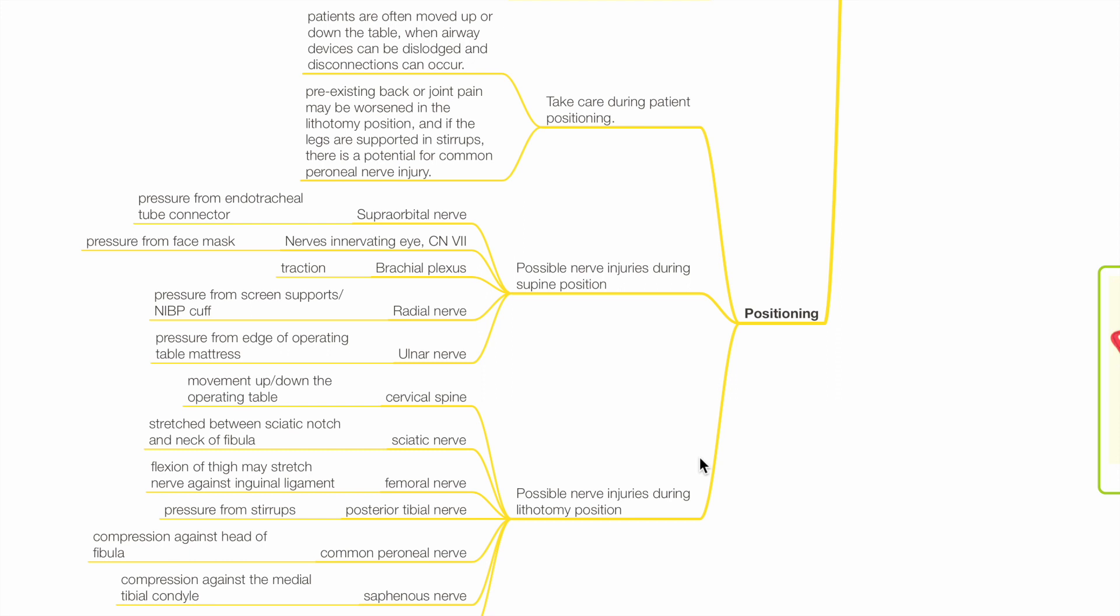Positioning. Take care during patient positioning. Patients may be moved up or down the table and airway devices may be dislodged or disconnected. Pre-existing back pain or joint pain may be worsened in the lithotomy position and if the legs are supported in stirrups, there is potential for common peroneal nerve injury.